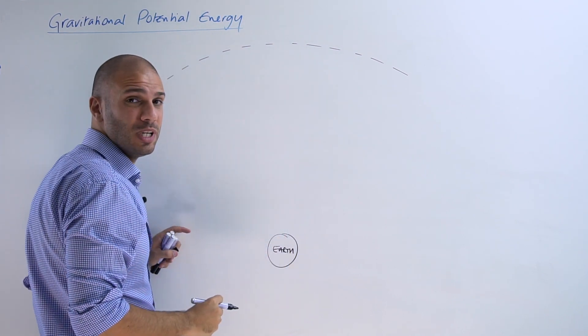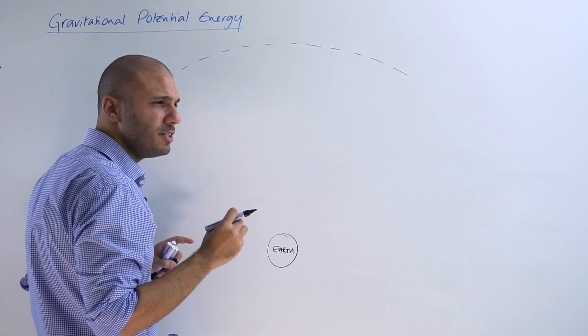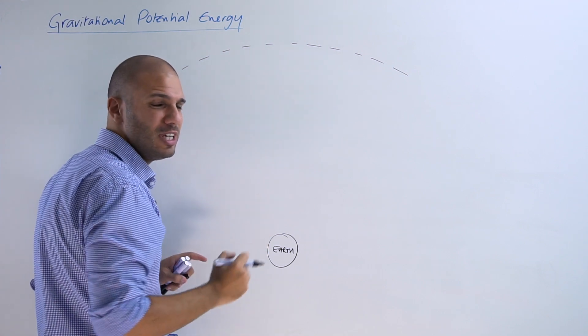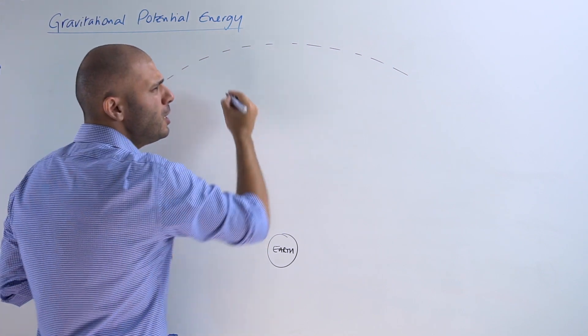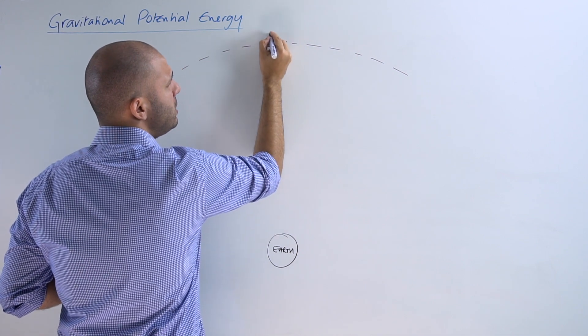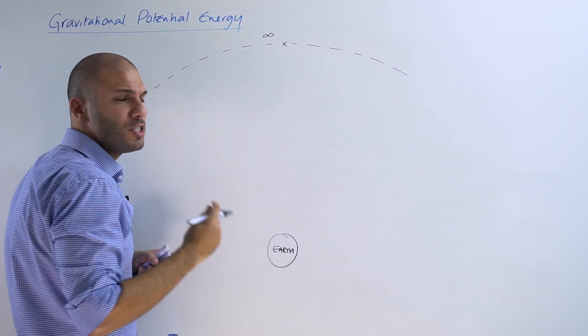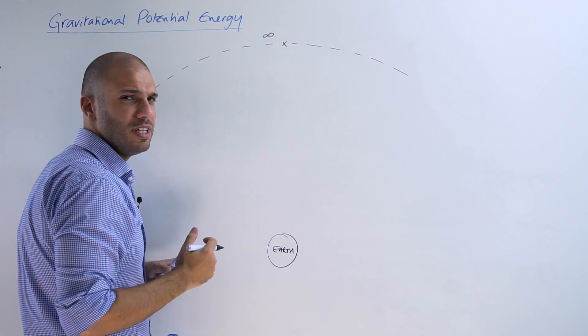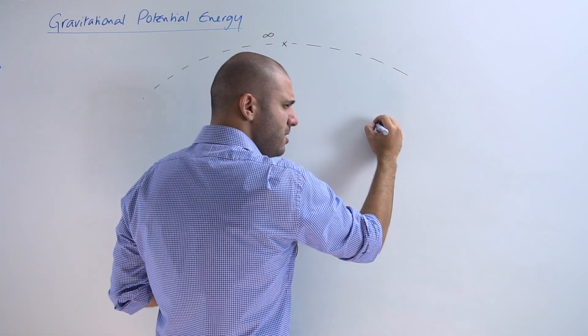The proper term for this would be an infinitely large distance. So let me just refer to this point X as being infinity. So what's going to happen at infinity?